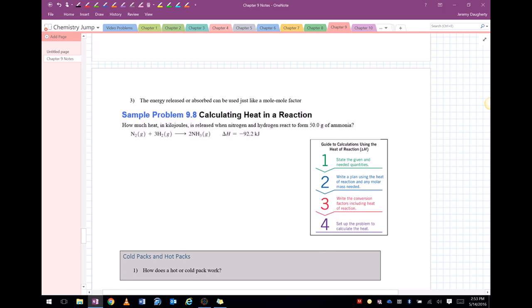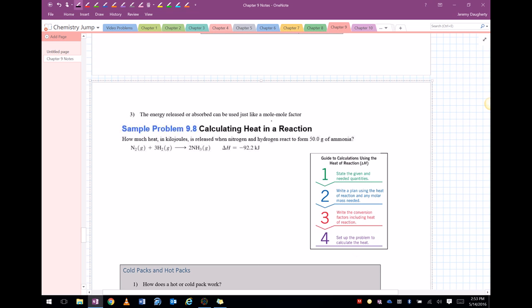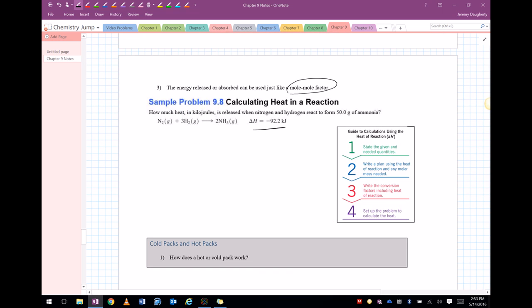Now, the energy released or absorbed, it can be used like a mole-to-mole factor. Let me use this equation as an example. So in this case, one mole of nitrogen will combine with three moles of hydrogen to give off two moles of ammonia. It will also release 92.2 kilojoules.